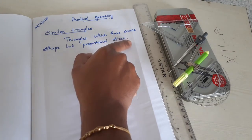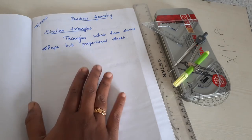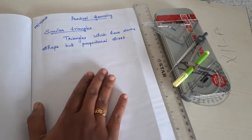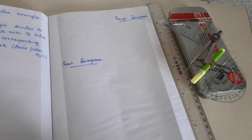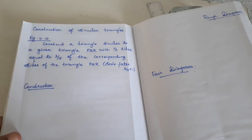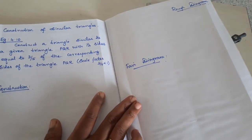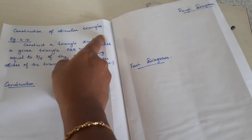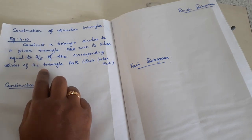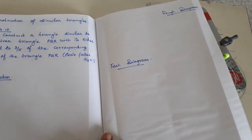Write the definition: triangles which have the same shape but proportional sizes. In geometry note, write everything using pencil only — no pen needed. The format is: on the left side, write the question and construction; on the right side, draw the rough diagram and fair diagram. For all problems, we are going to follow this format.